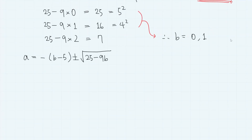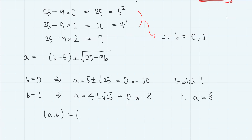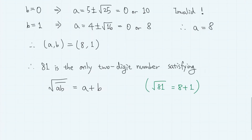Using these results to calculate A: when B equals 0, A equals negative 5 plus or minus 5, giving 0 or negative 10, both invalid. When B equals 1, A equals negative 6 plus or minus 4, giving 0 or 8. Hence the valid case is A equals 8. Therefore, (A, B) equals (8, 1) is the only possible single-digit solution, and 81 is the only two-digit number satisfying the given property.